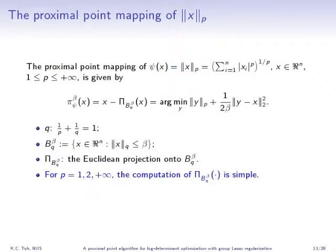I also need to look at the proximal point mapping of the p-norms of x. In this case, the proximal point mapping is x minus the projection of x onto the q-norm ball with radius beta, where 1/p + 1/q = 1. For p equal to 1, 2, or infinity, the computation of this projection is efficient — for p equal to infinity you need to do a sorting of the arguments, and for the other two it is really simple.